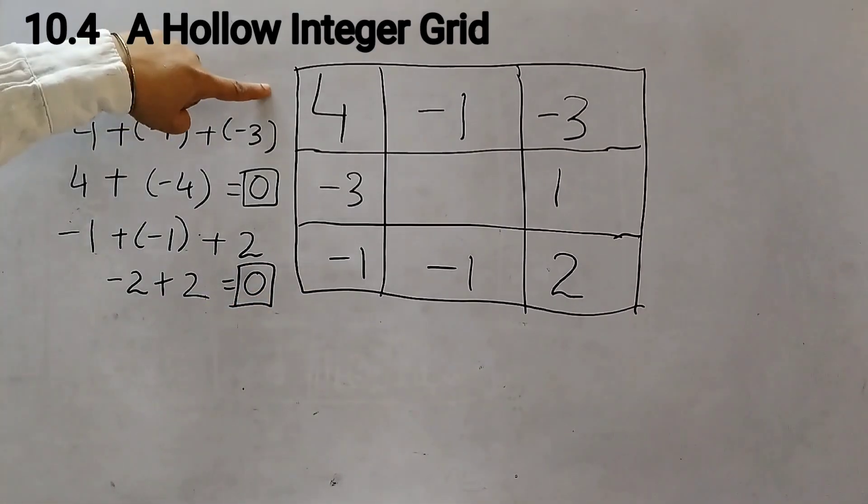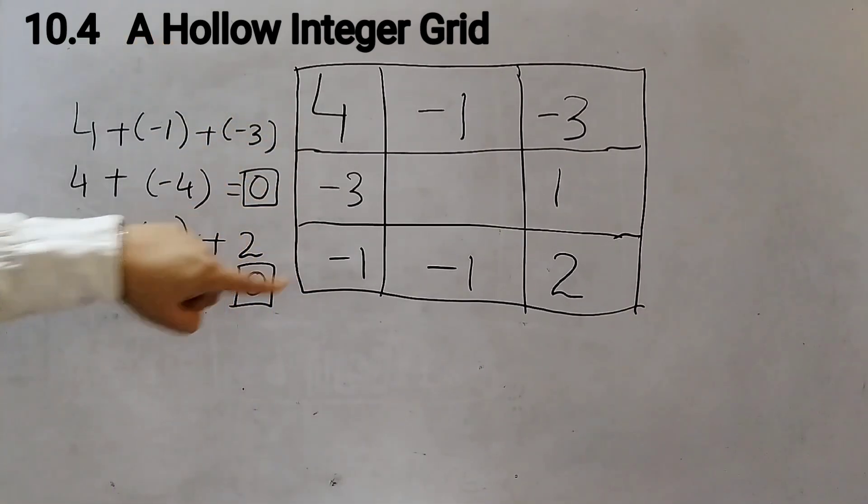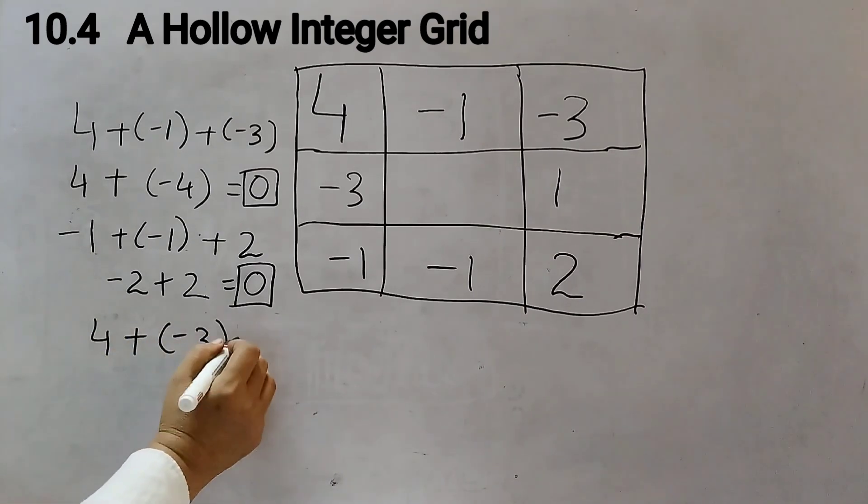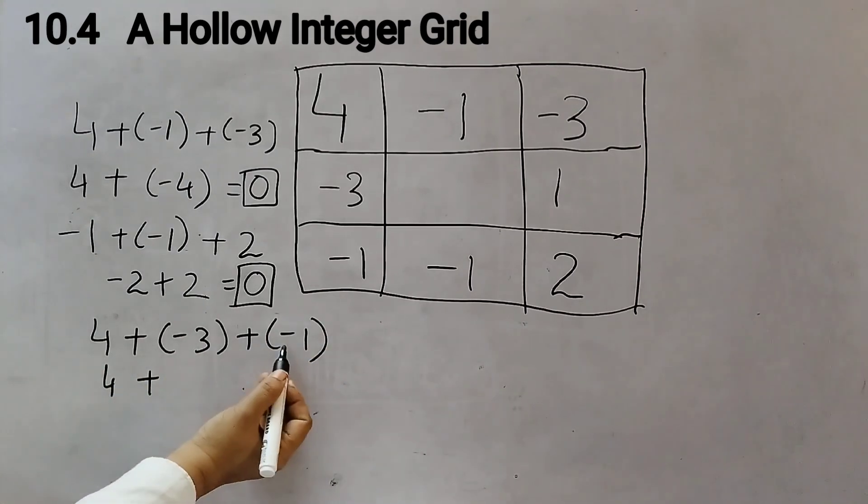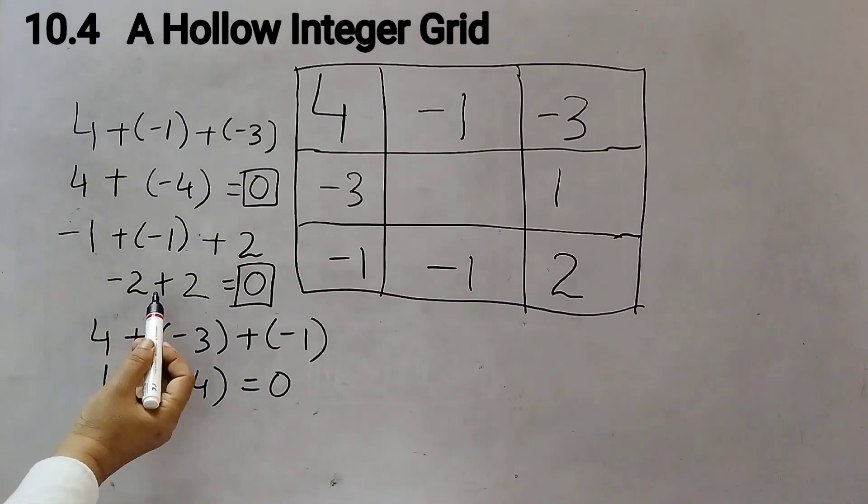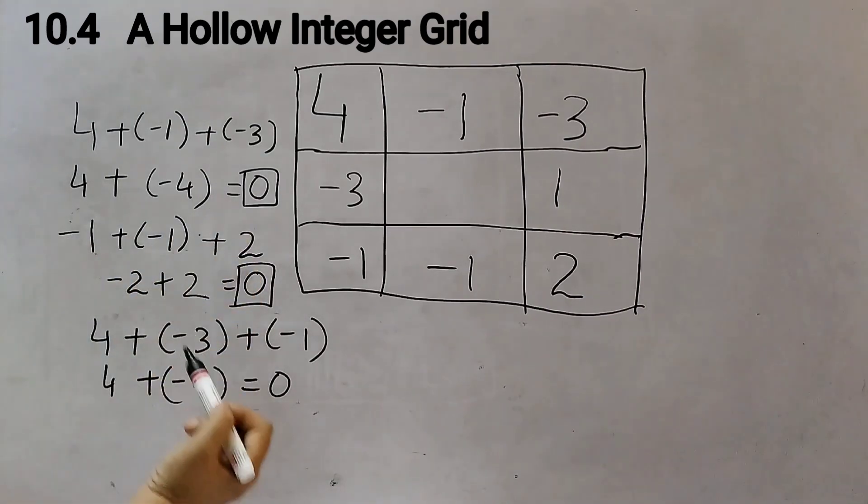Now we will check the left column: 4 minus 3 minus 1. Add up all the numbers, 4 plus (-3) plus (-1). 4 plus minus signs, so add up these two numbers, 3 plus 1 is 4 and then minus sign. 4 plus (-4) is 0. Whenever you have the same number and opposite sign, like this positive number adding to the same number with a negative sign, we always get a 0.